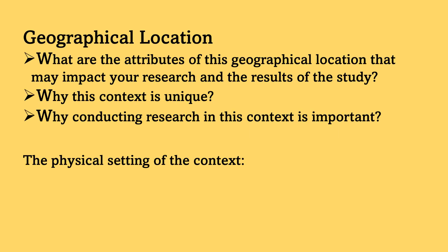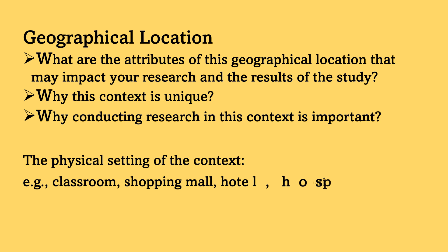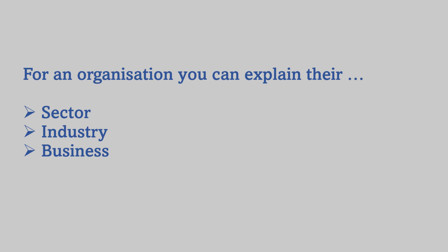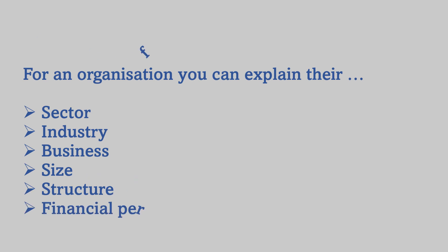You can also address the physical setting of the context. For example, whether the context of your study is a classroom, shopping mall, hotel, hospital, organization, or maybe an online platform. Be specific and detailed by explaining the characteristics of the settings using a top-down approach. For example, if it's an organization or a company, you may discuss the sector, industry, and business of the organization, and provide some information about its size, structure, and maybe financial performance if relevant.